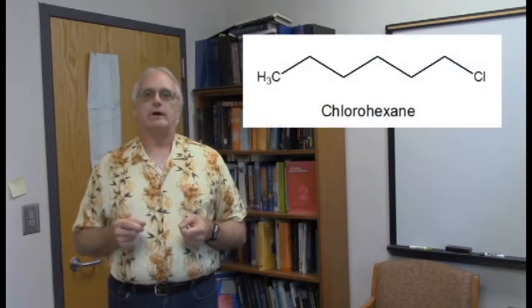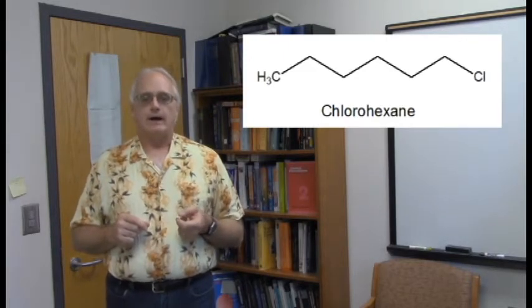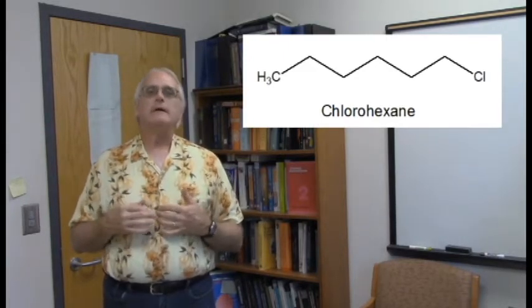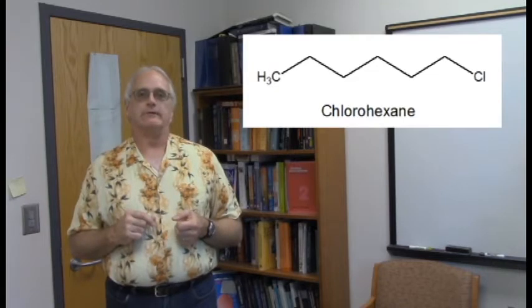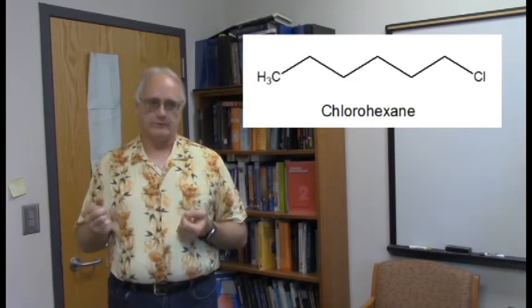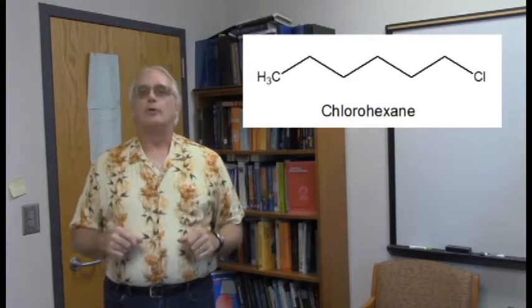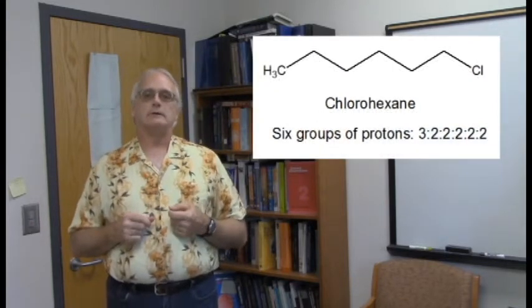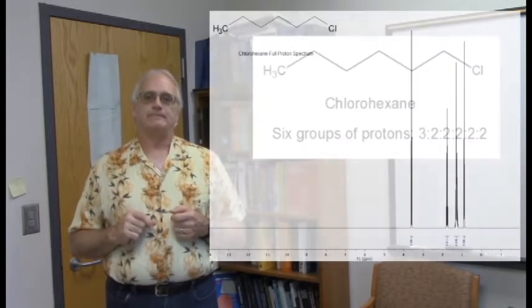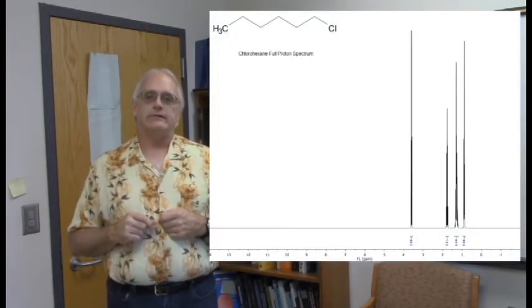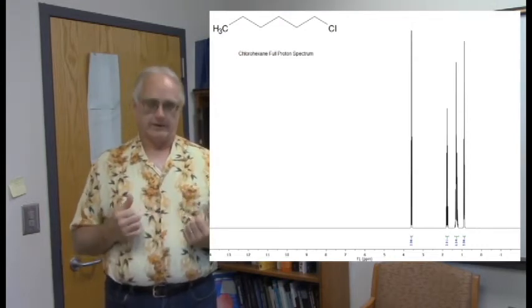One example is chlorohexane, where you've got chlorine at the end of a long string of carbons — a long alkyl chain. If we look at that structure, we would say there are six groups of protons. The molecule is not symmetric, so all the groups of protons are distinct, and they would come in a 3 to 2 to 2 to 2 to 2 to 2 ratio. But when we look at the actual proton spectrum for this molecule, we see something a little bit different — actually four resonances, not the expected six.